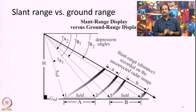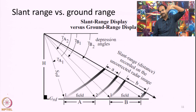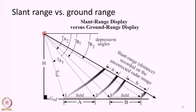A radar image basically works based on measuring the distance. The platform is flying and it calculates the distance between different objects on the earth surface from that point. The distance is actually measured in what is known as slant range — the radar is not looking at nadir but at some angle away from nadir. The line joining the antenna and any point on the ground surface is measured along this slant line. So the radar essentially measures the slant range distance.